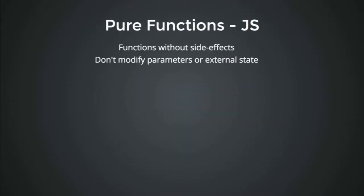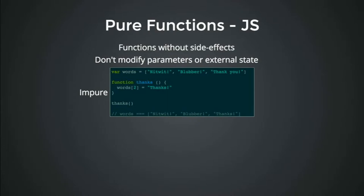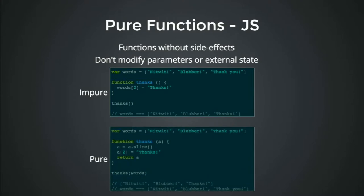Pure functions don't have any side effects — everything the function needs is passed in, it doesn't modify its parameters or anything outside its scope. Here's a bad example: we have an array of words and a function 'thanks' that changes the index to 'thanks' — it's modifying things we haven't told it to modify. It's impure. A pure version would not modify its parameters but return the change instead: 'thanks' would slice to get a copy of the array, update it, and return the new array without changing anything else.